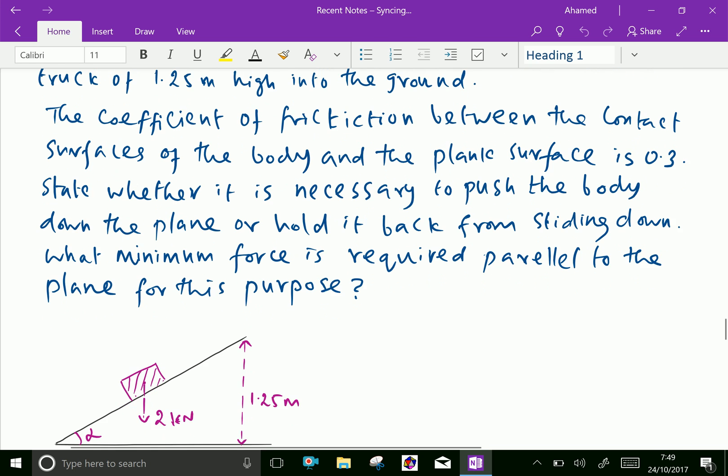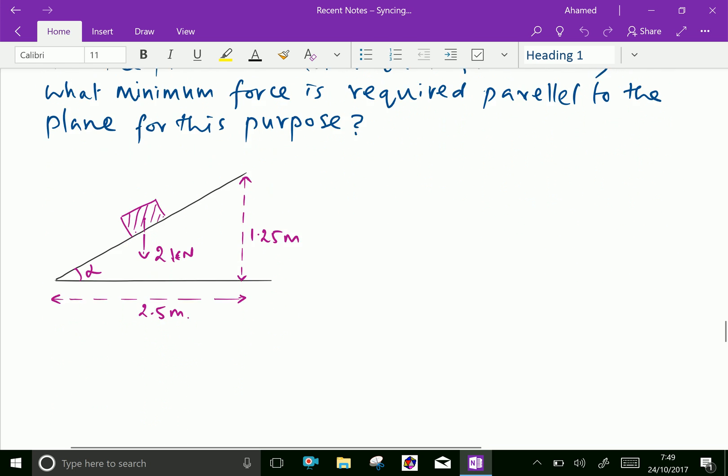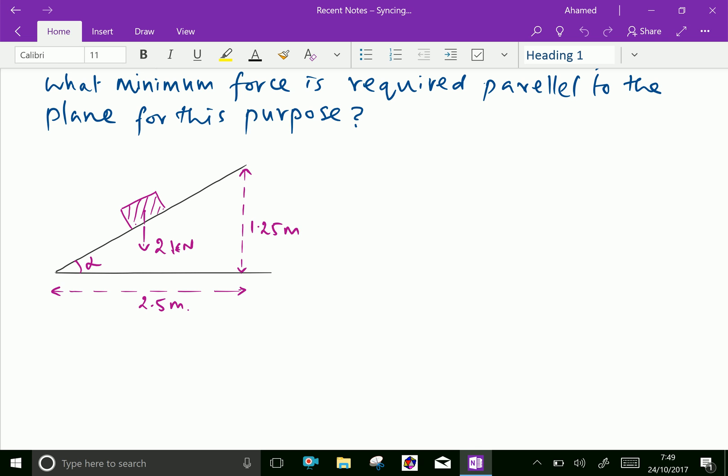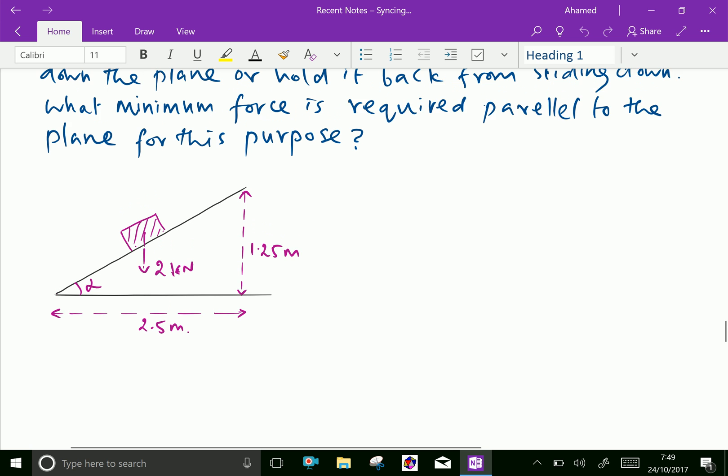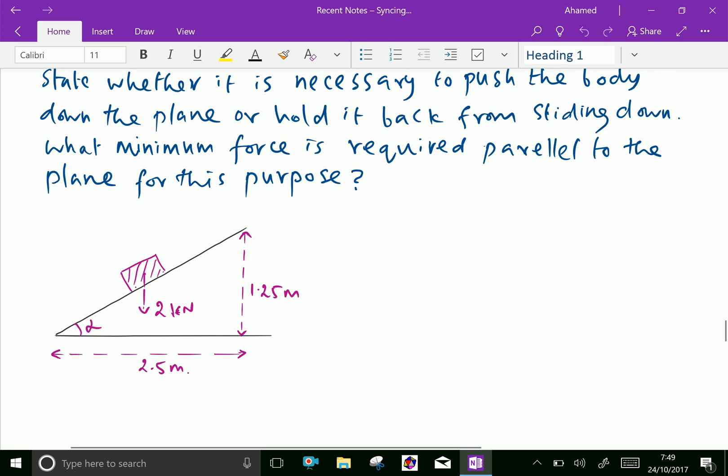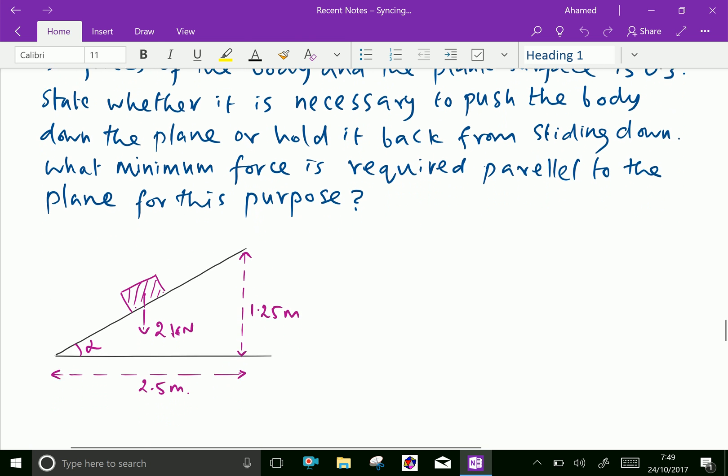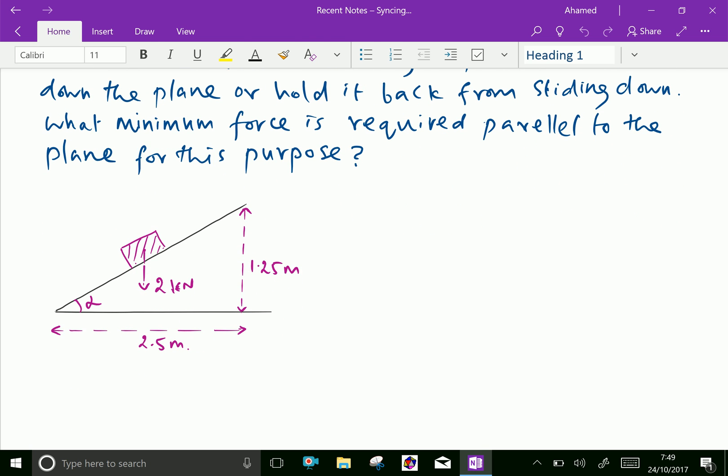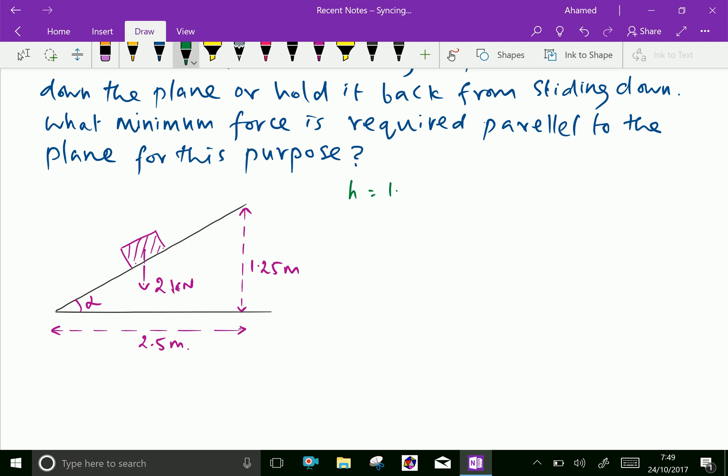Here suppose the body slides downward. Now let us write the given things first. Here alpha we'll calculate. First, height h equals 1.25 meter, the height of the truck, and width is w equals 2.5 meter.